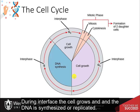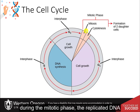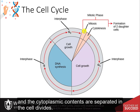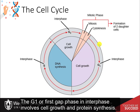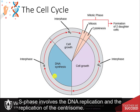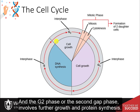During interphase, the cell grows and the DNA is synthesized, or replicated. During the mitotic phase, the replicated DNA and the cytoplasmic contents are separated and the cell divides. The G1, or first gap phase of interphase, involves cell growth and protein synthesis. S phase involves DNA replication and the replication of the centrosome. The G2 phase, or second gap phase, involves further growth and protein synthesis.